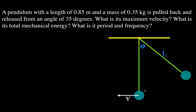First, we figure out the velocity of the pendulum as it swings through the equilibrium position when released from 35 degrees. The equilibrium position and the maximum displacement form a right triangle. The right angle is here, the length of the pendulum L is the hypotenuse, and we have our angle of displacement of 35 degrees. Using our trig functions sine and cosine, the side opposite the angle of displacement is L times sine of theta, and the side adjacent to the angle is L times cosine of theta.